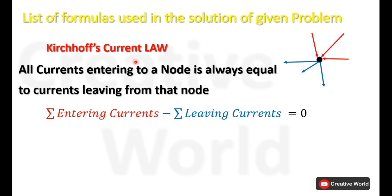According to Kirchhoff's current law, all currents entering a node are always equal to currents leaving from that node. The cumulative current on any node in a circuit is always zero. The equation states that the sum of all entering currents minus the sum of all leaving currents equals zero.